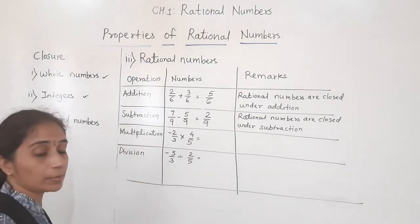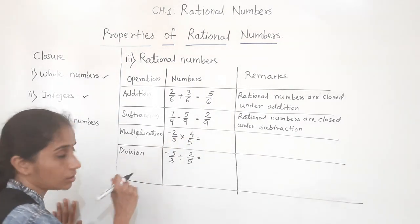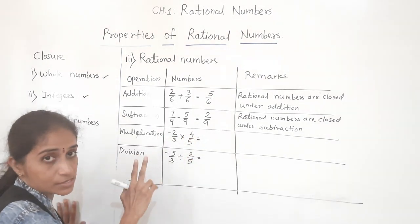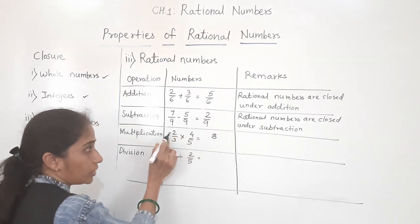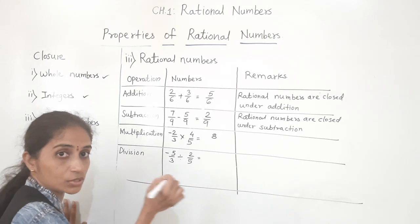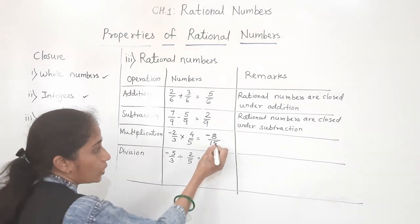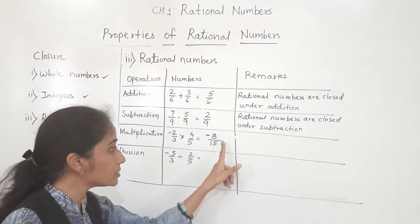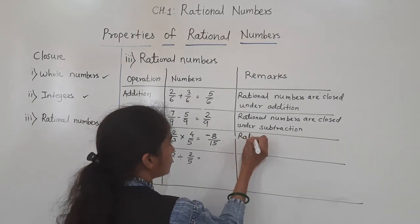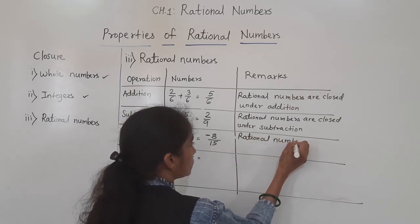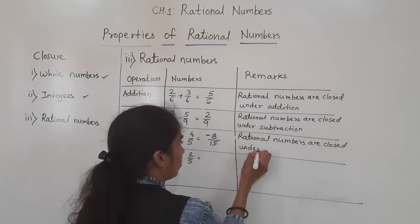Next, we will see if it works for multiplication. Take minus 2 upon 3 times 4 upon 5. Multiply the numerators: minus 2 times 4 equals minus 8. Multiply the denominators: 3 times 5 equals 15. One number is negative and another is positive, so the product is negative: minus 8 upon 15. Is that a rational number? Yes. Rational numbers are closed under multiplication.